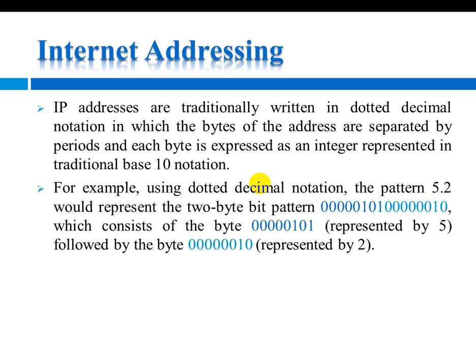IP addresses are traditionally written in dotted decimal notation, in which the parts of the address are separated by periods and each part is expressed as an integer represented in traditional base notation.